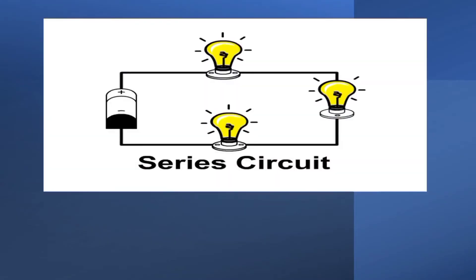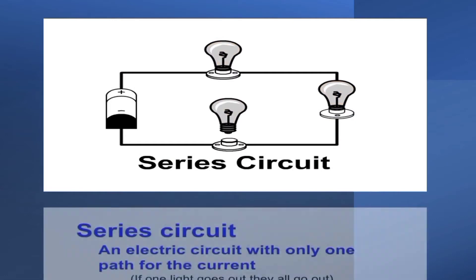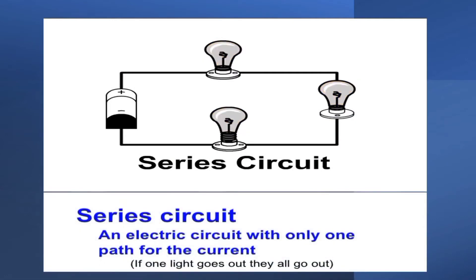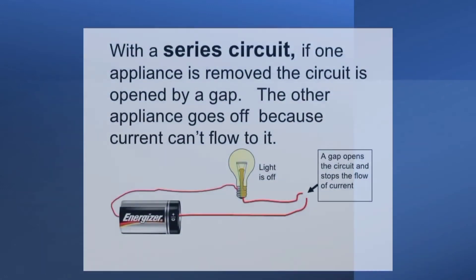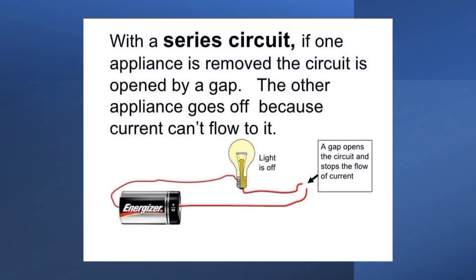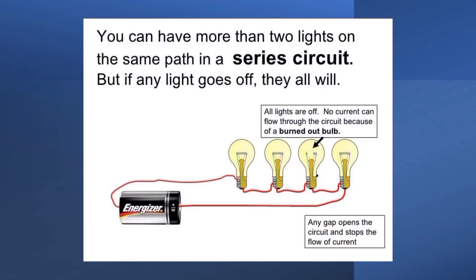First, let us have the series circuit. The defining characteristic of a series circuit is that there is only one path for current to flow. So, with a series circuit, if one bulb is removed, the circuit is opened by a gap and so the other bulb goes off because the current can't flow to it. You can have more than two bulbs on the same path for a series circuit, but if any goes off, they will all.